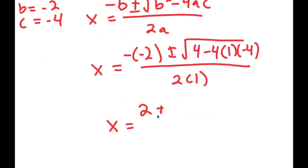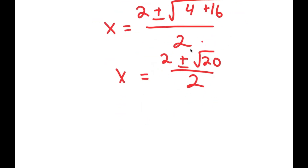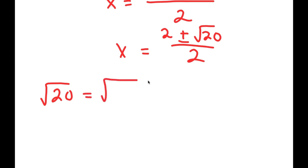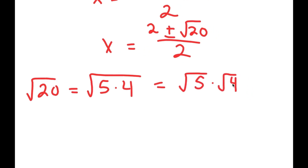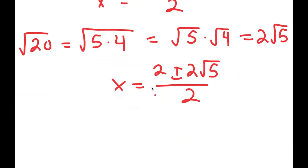This is equal to positive 2 plus or minus the square root of 4 minus 4 times 1 times negative 4, which is 4 plus 16, over 2. And this is equal to 2 plus or minus the square root of 20 over 2. We can simplify: the square root of 20 is the square root of 5 times 4, which is the square root of 5 times the square root of 4. The square root of 4 is 2, so this is 2 root 5. So x is equal to 2 plus or minus 2 root 5 over 2, and dividing both terms by 2, x is equal to 1 plus or minus the square root of 5.